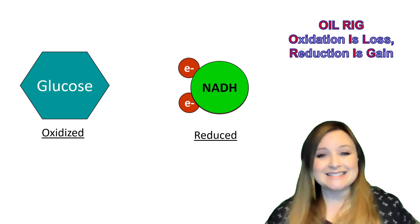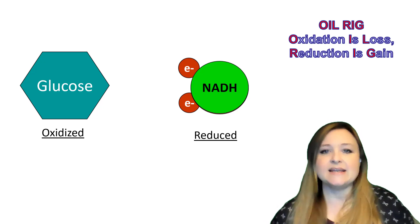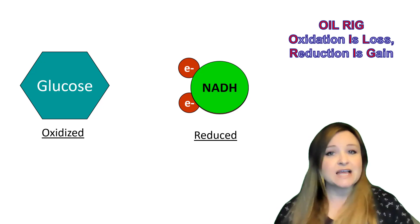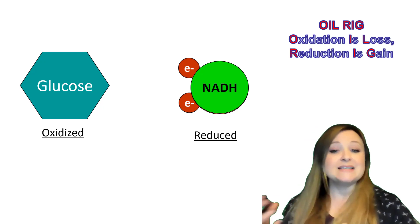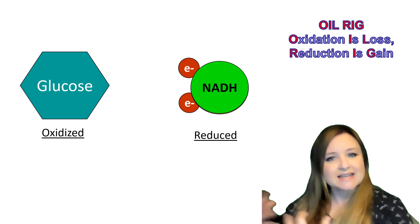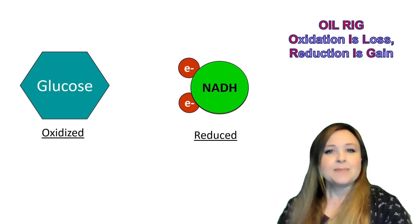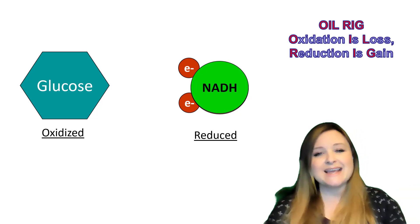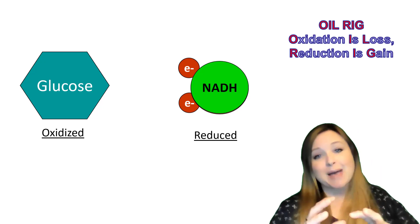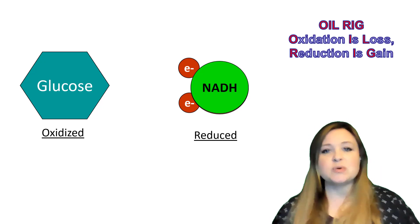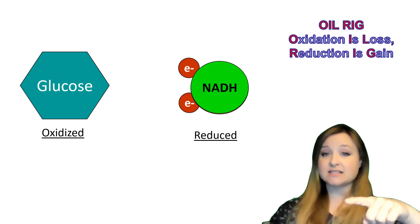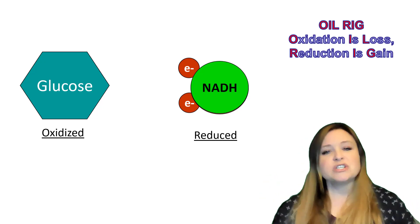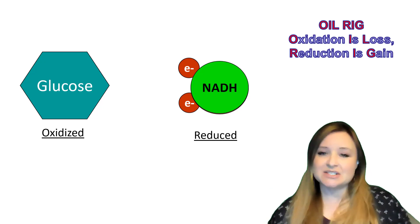It's sort of a circle: NAD+ is available and has room for electrons, so NAD+ is reduced to NADH as it gains those electrons. Then NADH has the electrons and can drop them off — so NADH becomes oxidized back to NAD+. It's the cycle between NAD+, which accepts electrons (the oxidized version), and NADH, which has the electrons (the reduced version).